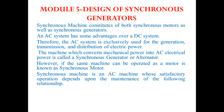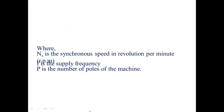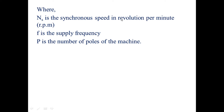A synchronous machine is an AC machine whose satisfactory operation depends on the following relationship: Ns = 120f / P, or f = P·Ns / 120, where Ns is the synchronous speed in RPM, f is the supply frequency, and P is the number of poles.